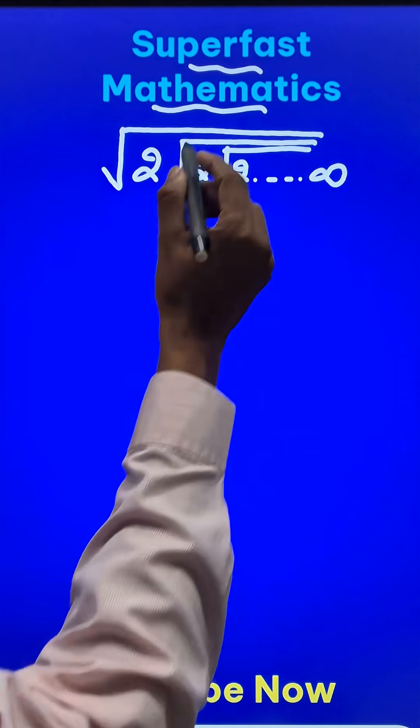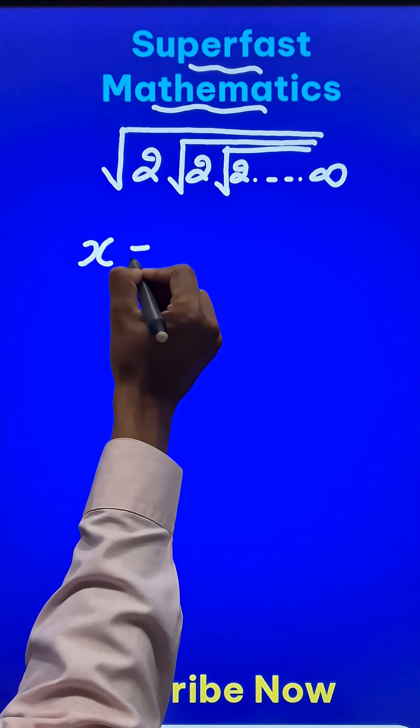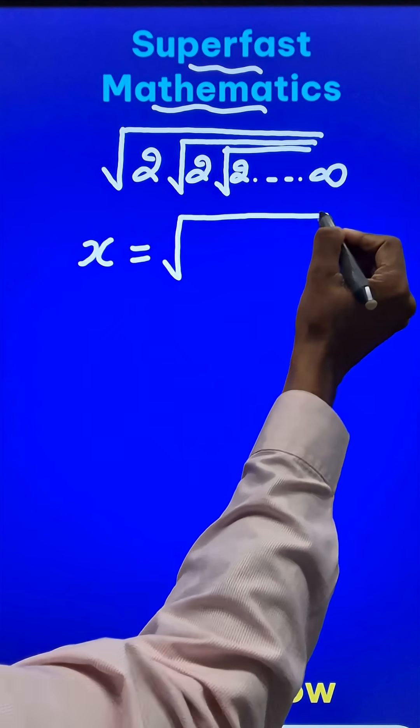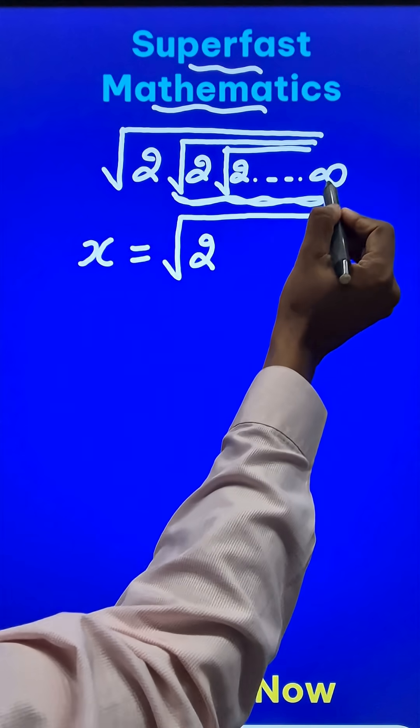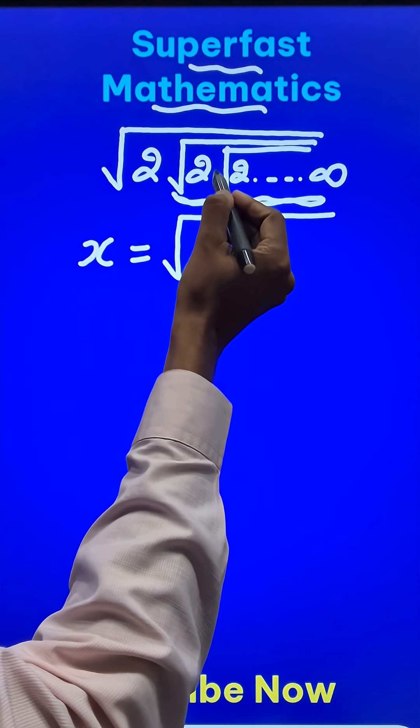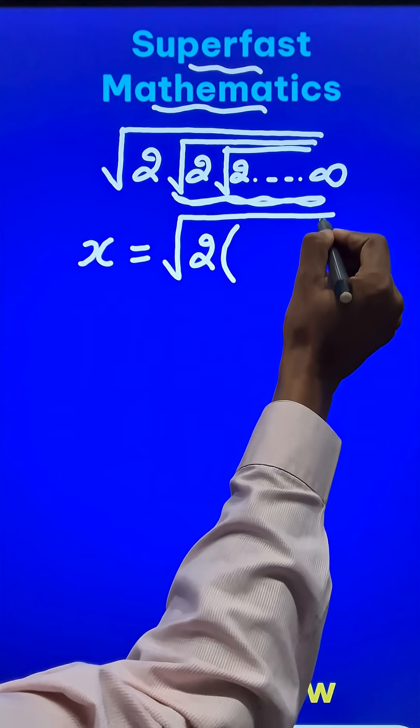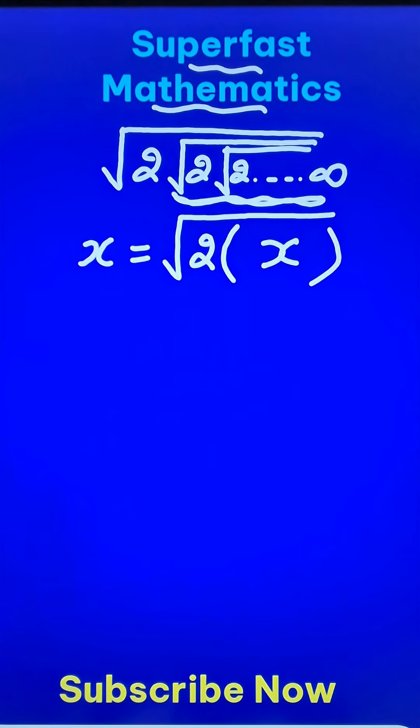Now if you assume this entire expression to be equal to x, then the square root of 2 and inside if you see this part, this actually is the question itself. And so we can write this part, the one in the bracket, as x because that is the question.